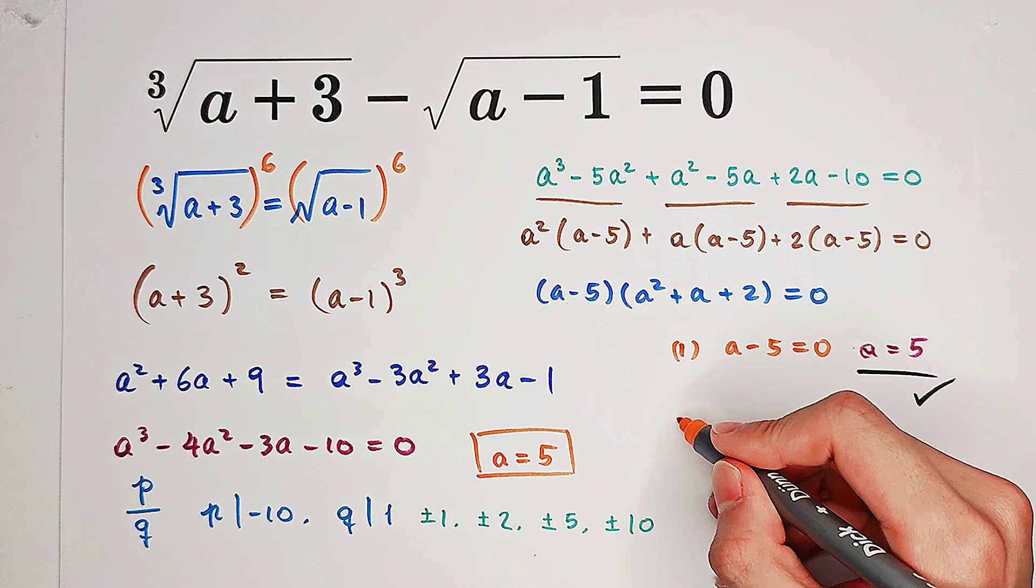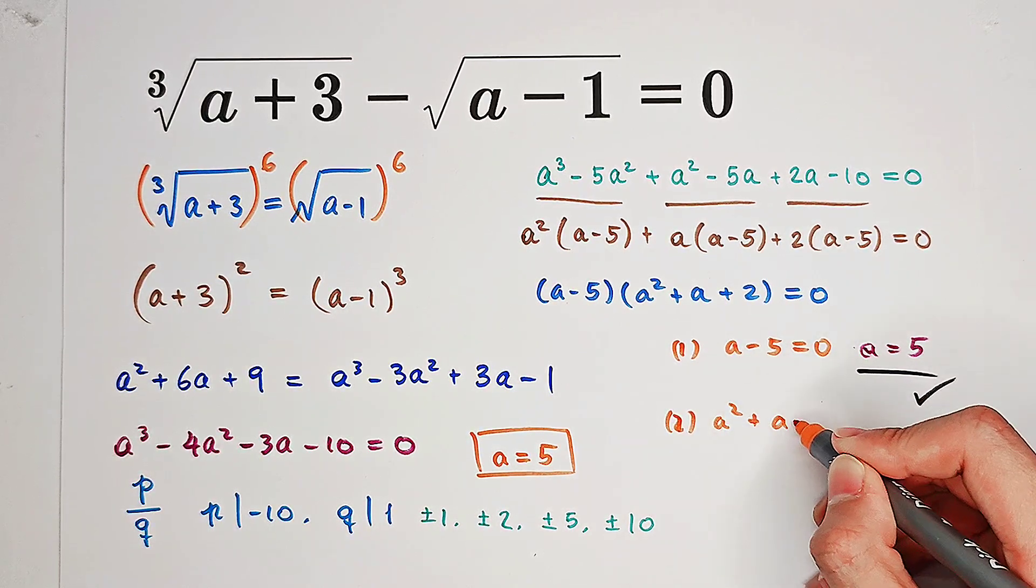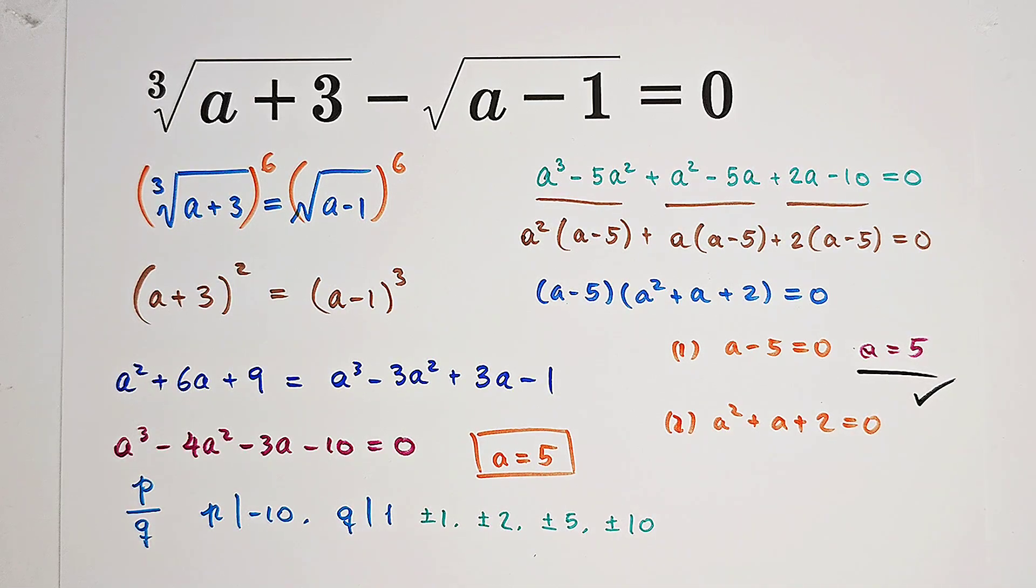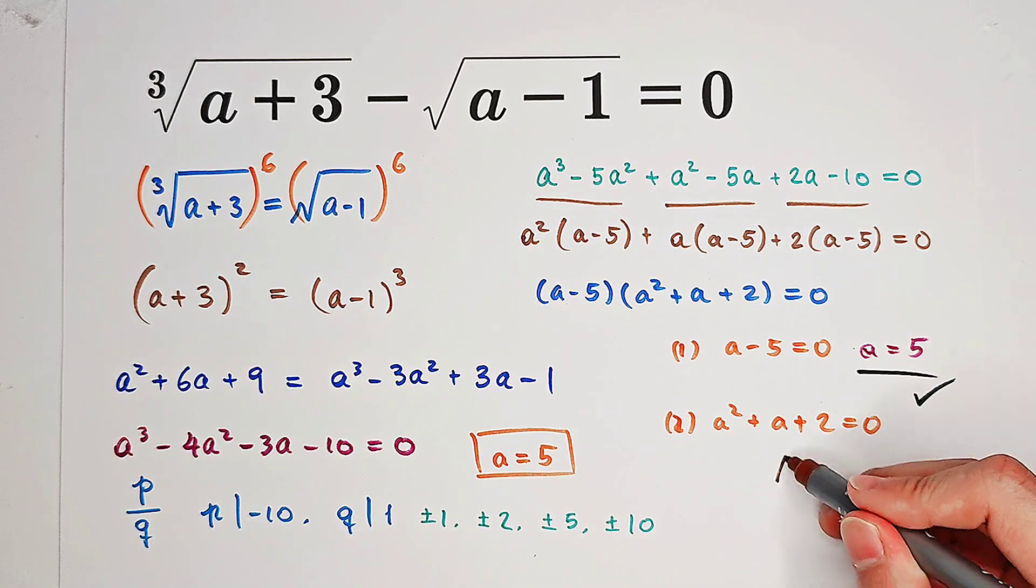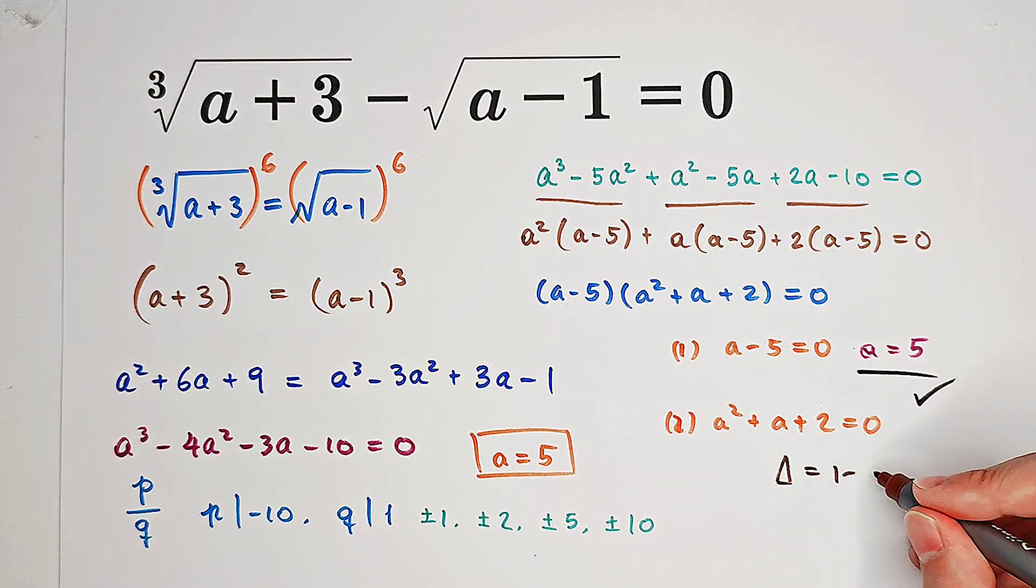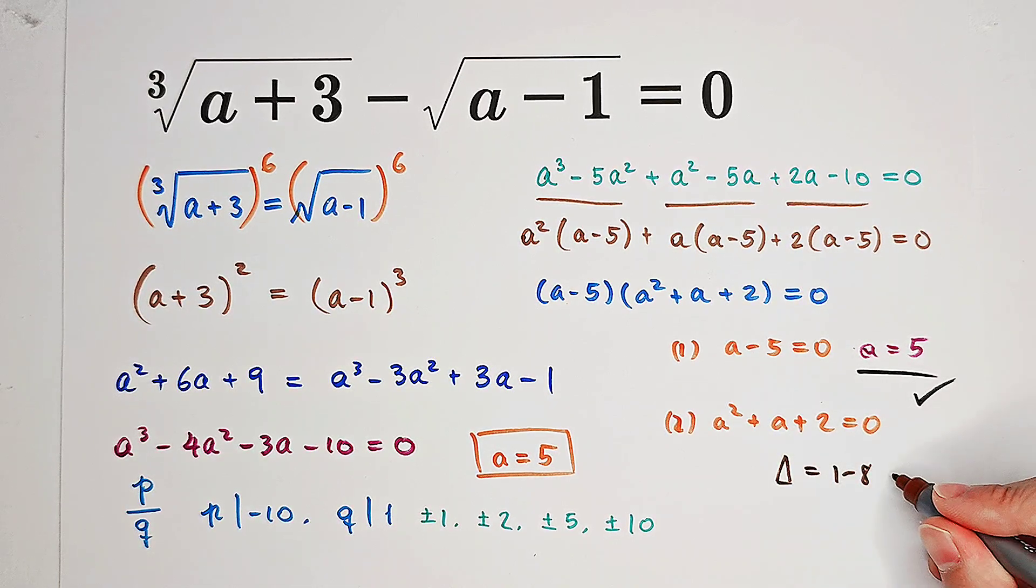In our second case, we get a squared plus a plus 2 equals 0. And in this case, you can see that the delta is b squared minus 4ac, 1 minus 8, which is less than 0. So there isn't any real solution. There are only two imaginary solutions.